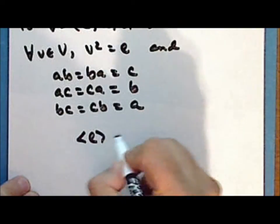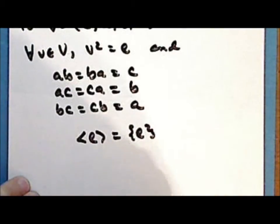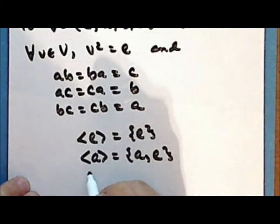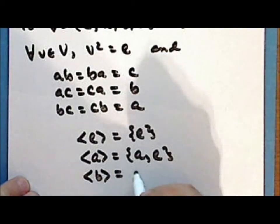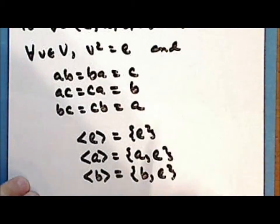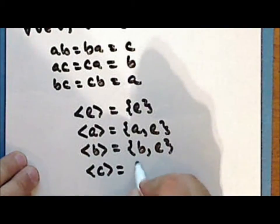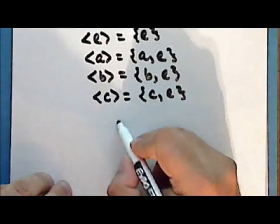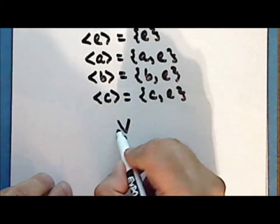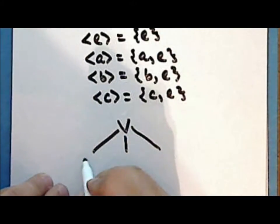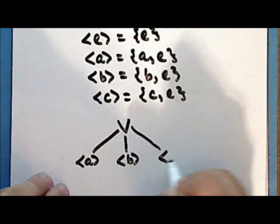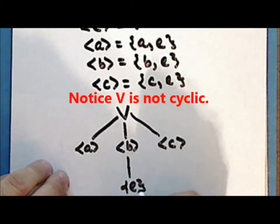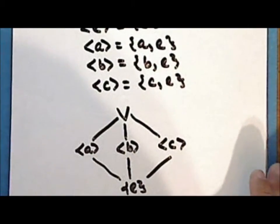If we look at the subgroup generated by the identity element, then this is the trivial subgroup. The subgroup generated by the element A is the group which contains the element A and A²=identity. The cyclic subgroup generated by the element B is the group which contains the element B and the identity. And the cyclic subgroup generated by C is the group which contains the element C and the identity. So the Klein four-group has three non-trivial proper subgroups: the subgroup generated by A, the subgroup generated by B, and the subgroup generated by C, and each has as a subgroup the trivial subgroup.